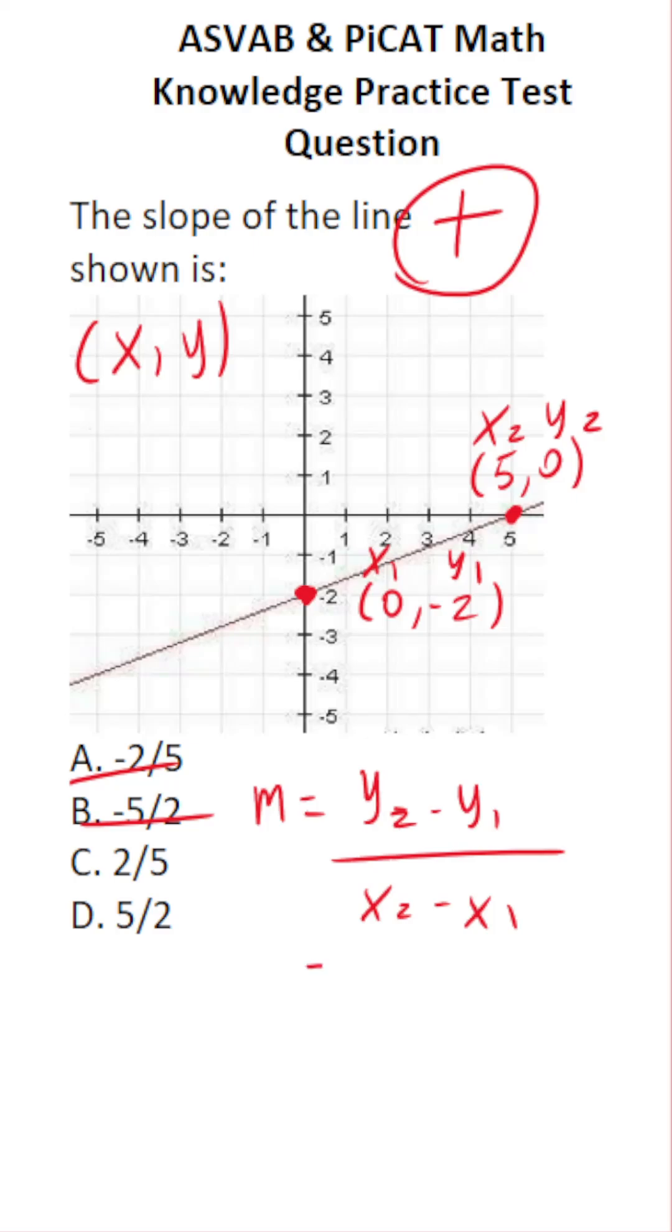And now all you have to do to calculate slope is plug in those values. What is y2? It's 0. What is y1? It's negative 2. What is x2? X2 is right here. It's 5. And what is x1? X1 is right here. It's 0.